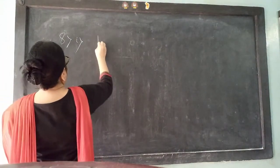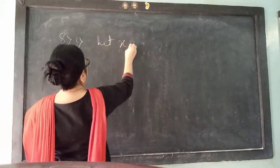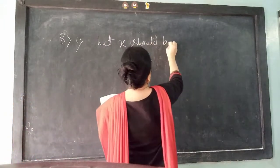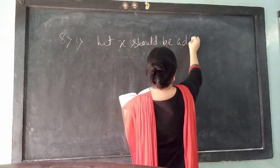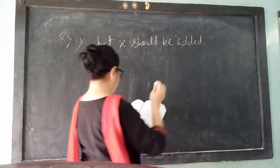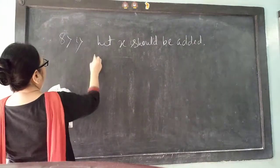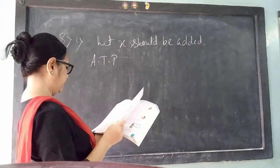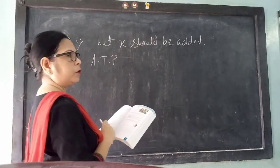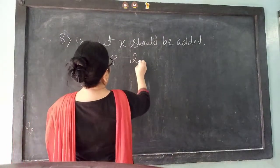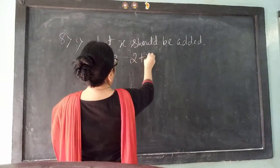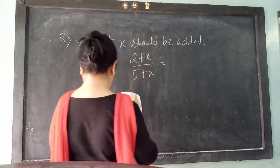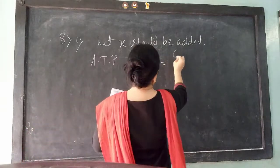So first read the question. Let x be added to both the terms. So what will be my equation? Both are terms of 2, so 2 plus x by 5 plus x — the ratio will become 6 is to 11.